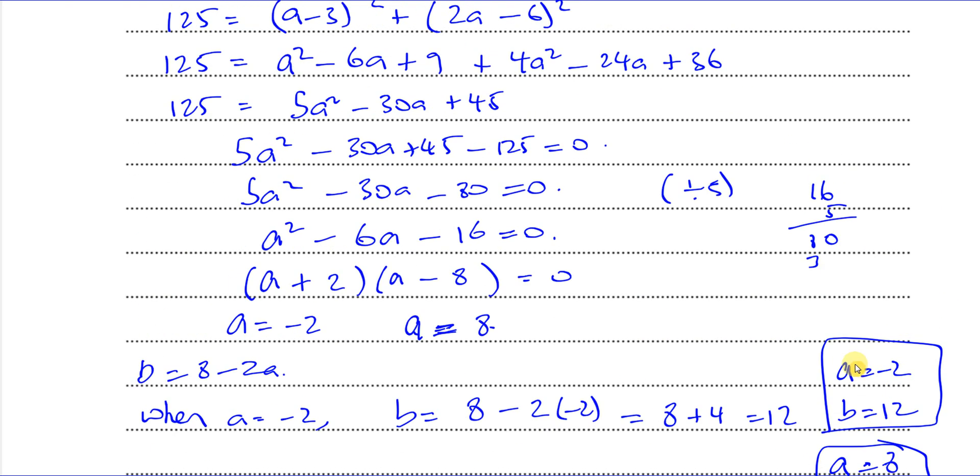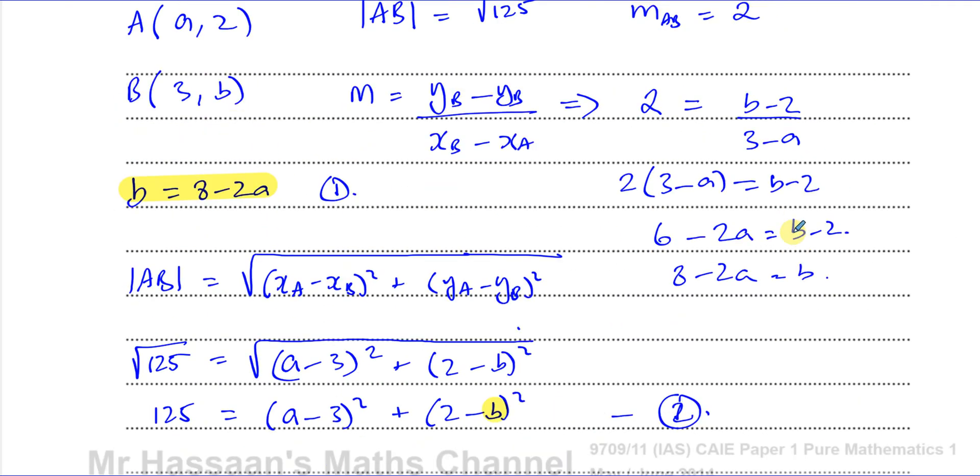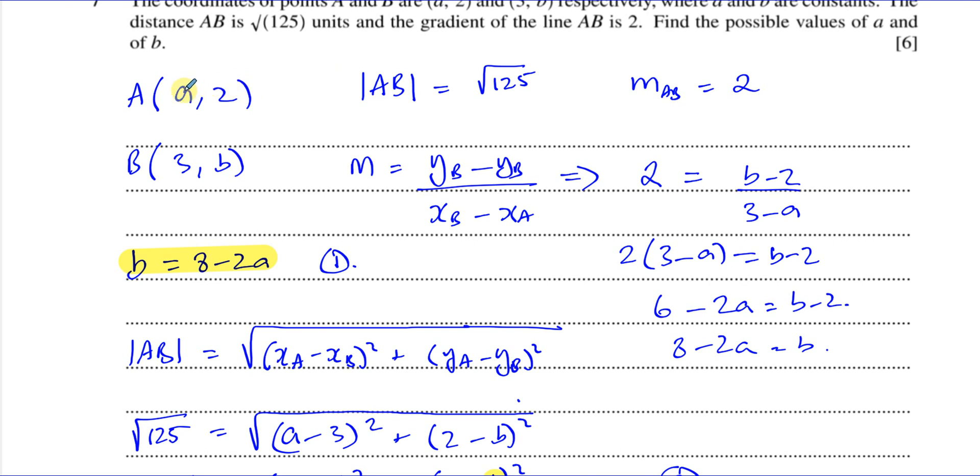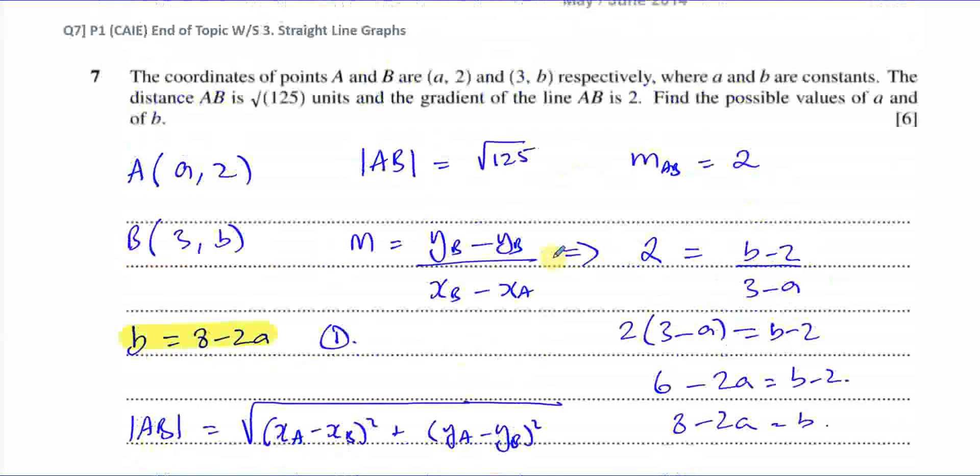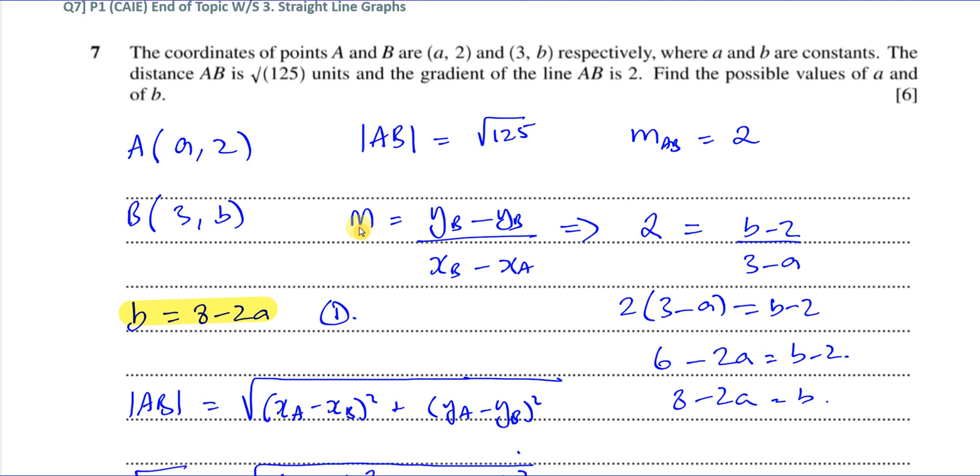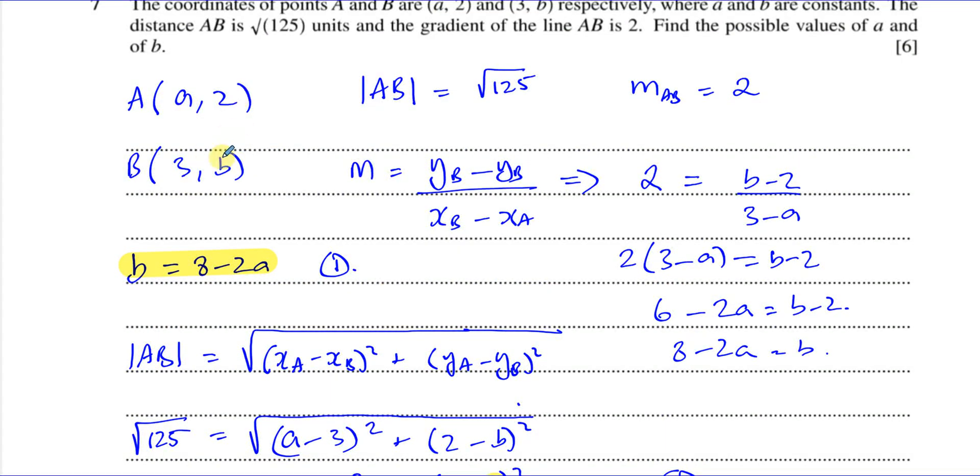If we wanted to check our answers, we could check to see if you wanted to. We can check different values. When a is 8 and b is negative 8, does it give us a gradient of 2? Is the distance between them root 125? We can check. And when a is minus 2 and b is 12, does the gradient give us 2 and is the length also root 125? You can check to make sure that you've got the right answers. So that's how we answer this question.